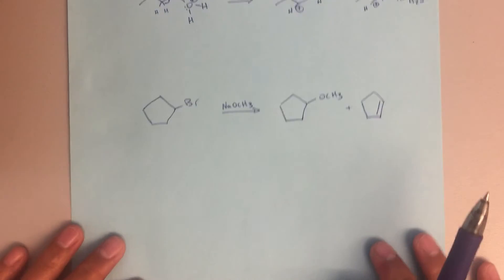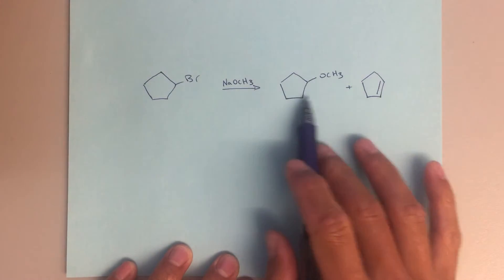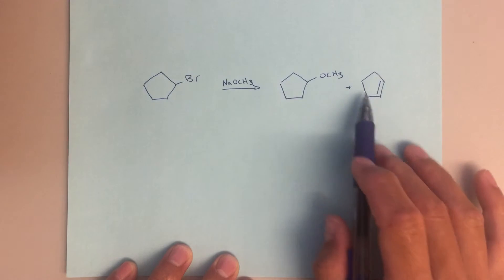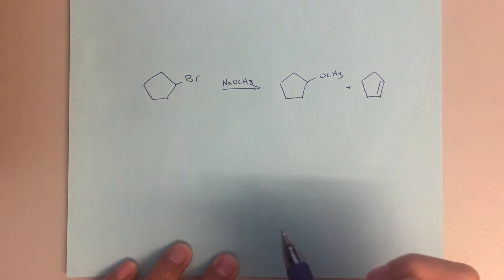For the next reaction mechanism, here we've got two very different looking products. I would say this is a substitution product, and then this is going to be an elimination product. The other thing, so again, right away I'm thinking to myself something about SN1, SN2, and I'm thinking E1 or E2.